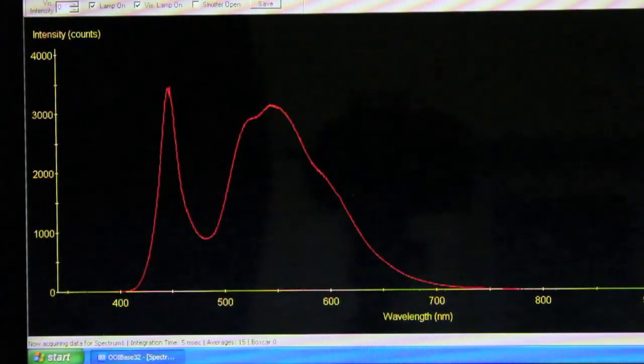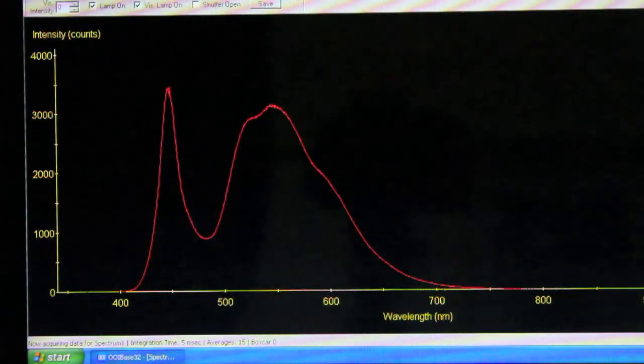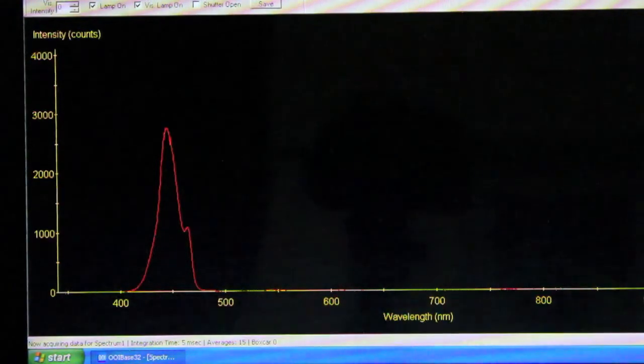Here's the output of the white Solar 1200 and we add the filter to isolate just the blue part of the spectrum.